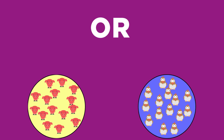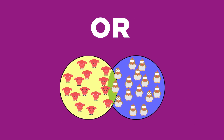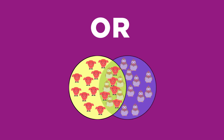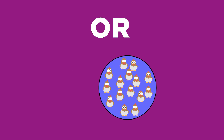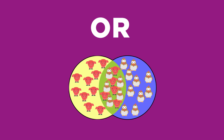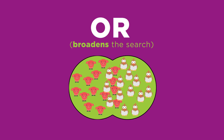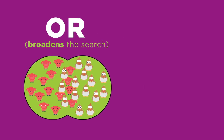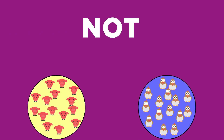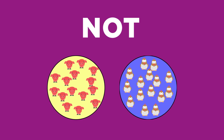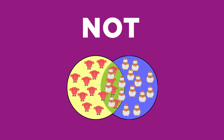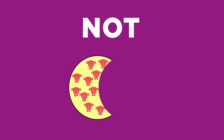Using OR between two keywords tells the computer to include search results that have one keyword or the other keyword, or both of them. OR broadens the search. Using NOT between two keywords means that the first keyword must be present but the second keyword cannot be. NOT narrows the search.